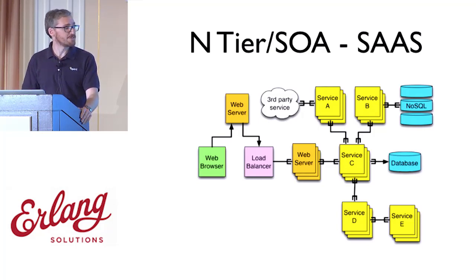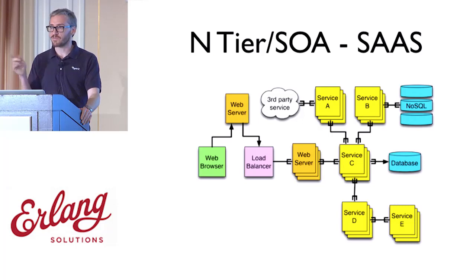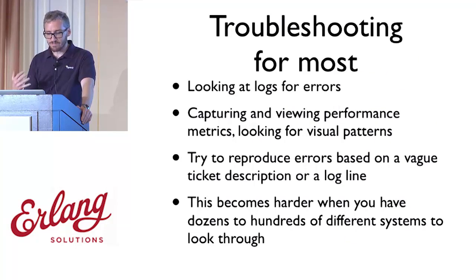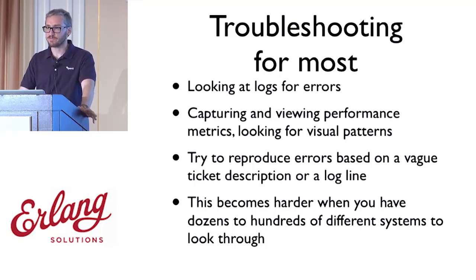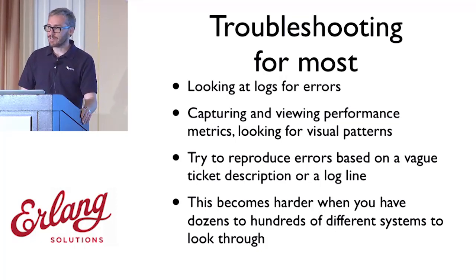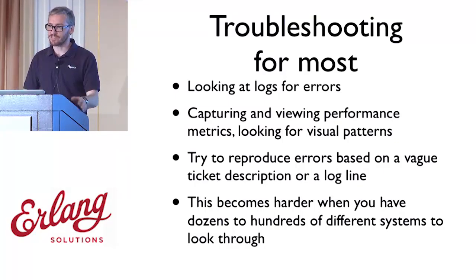When requests come in from a user, they could hit any layer of any of those services because most of the time you're doing fairly generic round-robin balancing. The big question is: how do I figure out when something's going wrong? What most people do to troubleshoot is go look at the logs for errors, maybe capture performance metrics, or get a vague ticket and try to reproduce what happened. It becomes harder and harder as you have dozens and hundreds of machines in your facility.